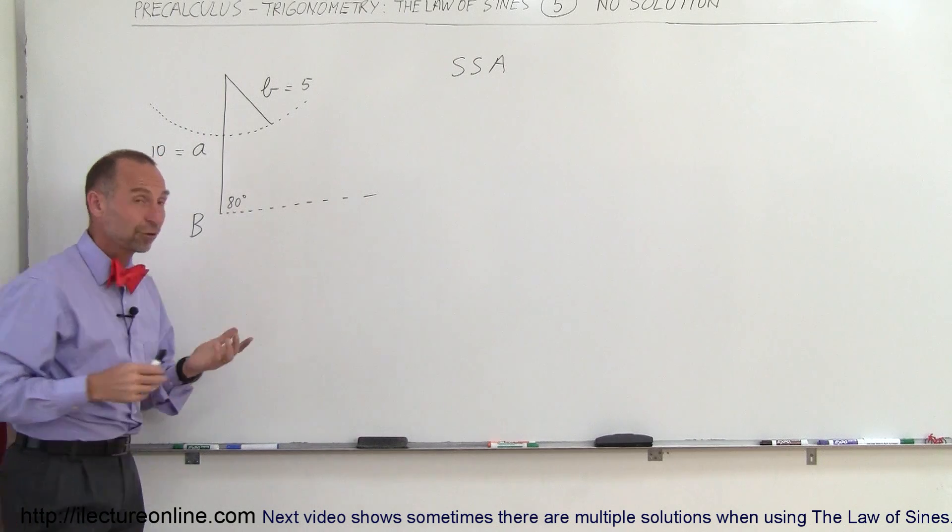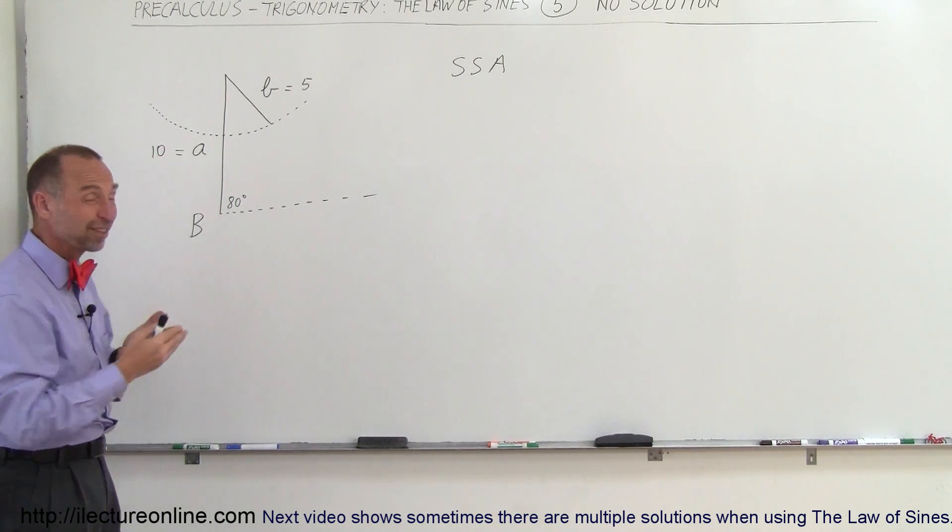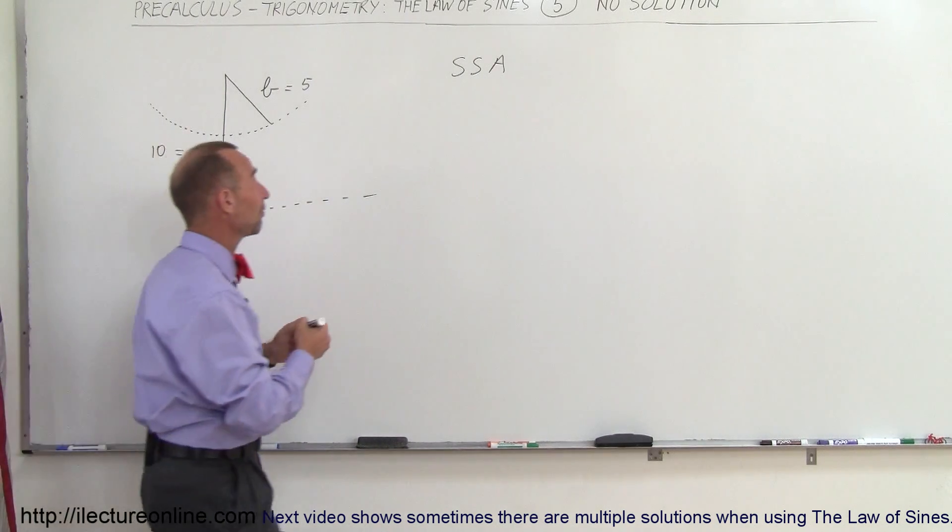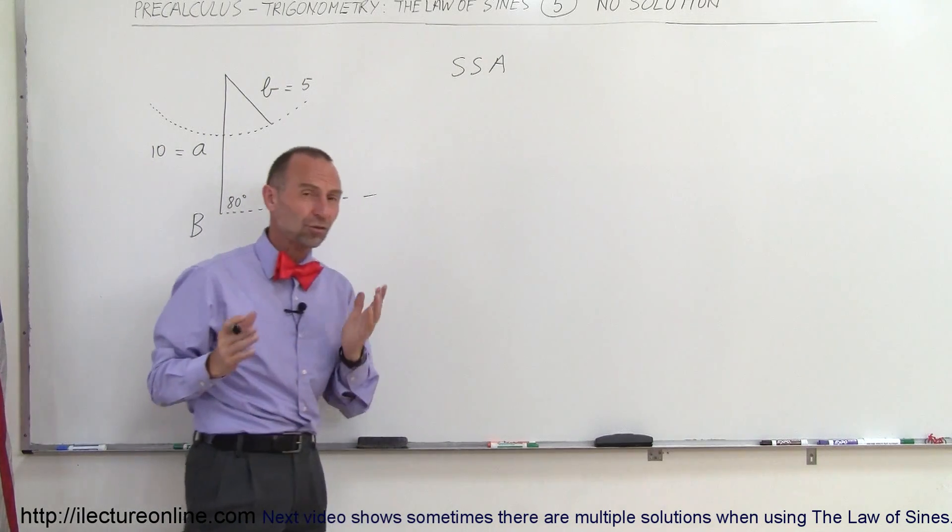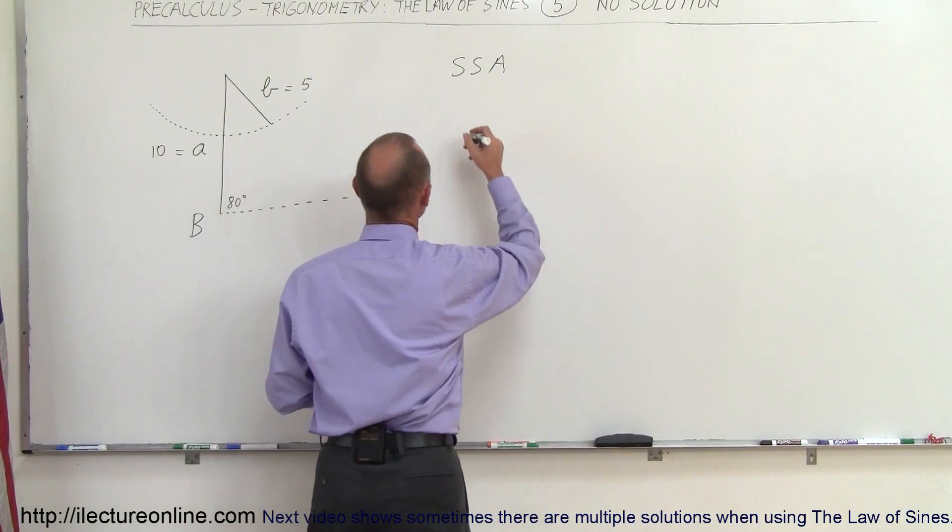You're in a situation where at first you say, okay, if I'm given these parameters I think I'll be able to solve using the Law of Sines. If you don't actually have a picture of the triangle to see what it looks like, you end up with something like this.